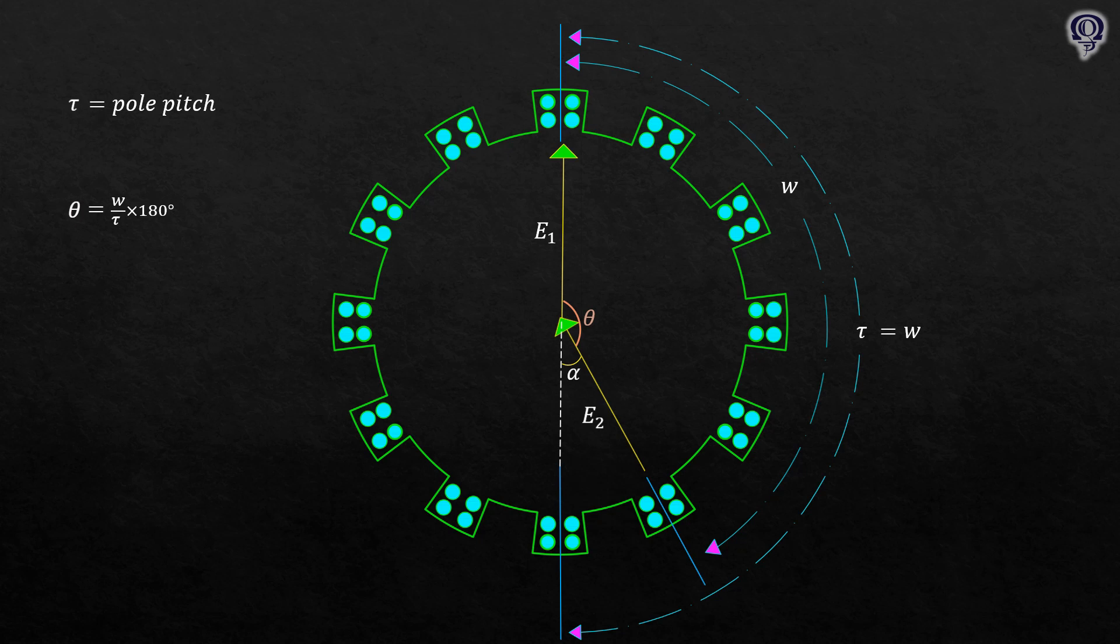So 180 degrees divided by tau is just 1, in which theta would just be equal to W. But we can also see that theta is just 180 degrees minus alpha. Adding alpha on both sides will give us alpha equals 180 degrees minus theta. We'll substitute the value of theta and we will get this equation.